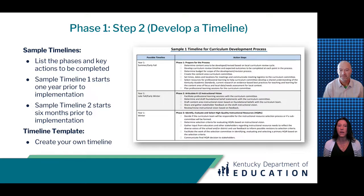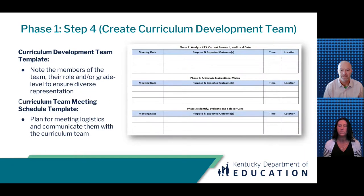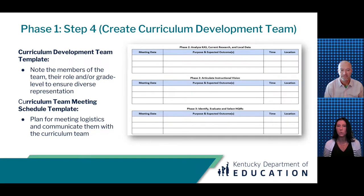A blank timeline template is also included for districts to create their own. To support Step 3, the CDP includes a curriculum development budget template to assist districts in thinking through what is needed for the work, possible associated costs, and funding sources. It also includes examples of munis codes commonly used for curriculum work. For Step 4, there are two key tools: the curriculum development team template, where districts can record members, their role, and their grade level to ensure diverse representation; and the curriculum team meeting schedule template, which allows district leaders to plan for meeting logistics and communicate those plans to the curriculum team.